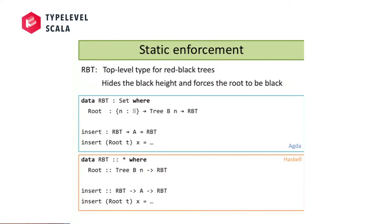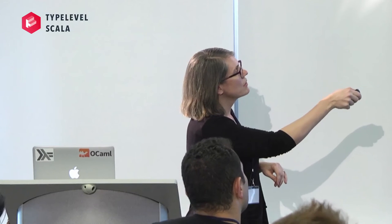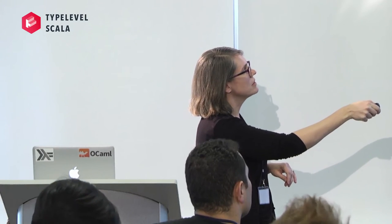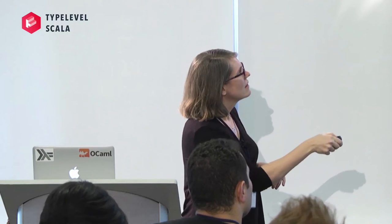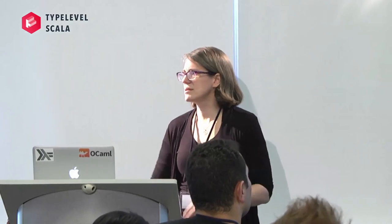We want to capture that the root of a red-black tree must be black. The RBT type is just a wrapper that holds one of these trees but forces it to be black at the top. This looks identical in Haskell and Agda. The insertion function patterns match on the root and calls a helper function like INS to do the actual insertion. But how is this different from the version without invariants? I want to make some observations about the differences.